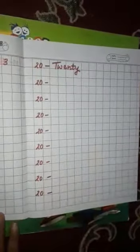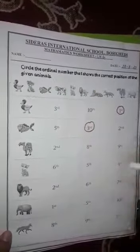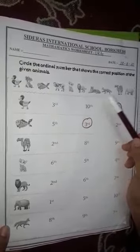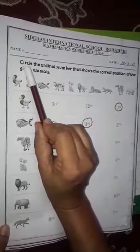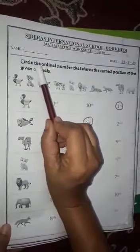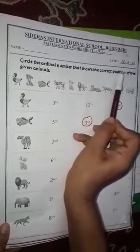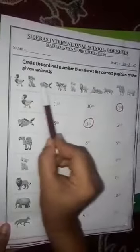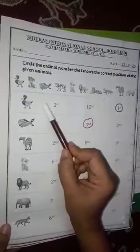I gave you one more homework. See this worksheet? This worksheet you have to collect from school. I have given you this activity which is ordinal numbers. What do you have to do in the ordinal numbers? See this exercise: circle the ordinal number that shows the correct position of the given animals. Now look here.